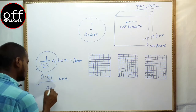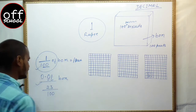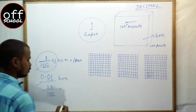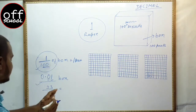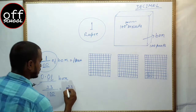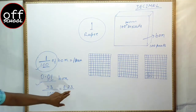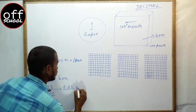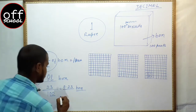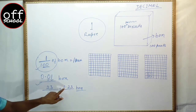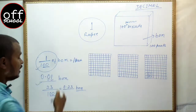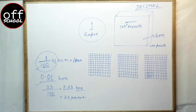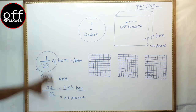If you consider 23 parts out of 100, that means you have taken 23 packets. If you want to represent 23 by 100 in decimal form — there are 2 zeros in the denominator, so you put the decimal point after two digits from the right side. The two digits are 3 and 2, so after placing the decimal you get 0.23. This represents 0.23 of a box, and in terms of packets it represents 23 packets. This is how we represent fraction in decimal form.